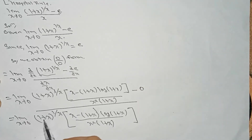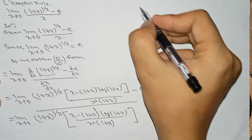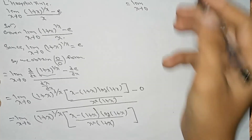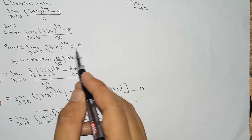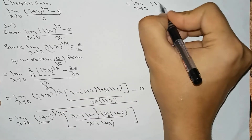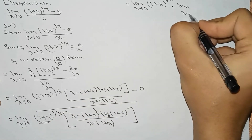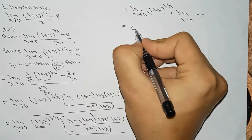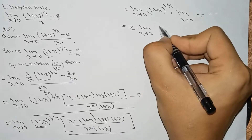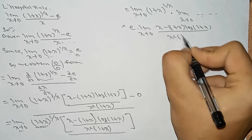Now, this is a separate term divided by 1, and another term below. We can see limit x tends to 0 of (1 plus x) to the power 1 by x, which we have already seen equals e. So we can write this as e multiplied by limit x tends to 0 of [x minus (1 plus x) log(1 plus x)] divided by x squared (1 plus x).